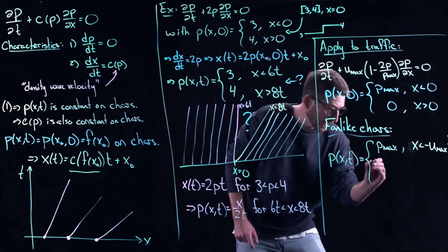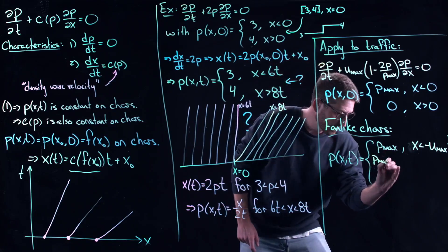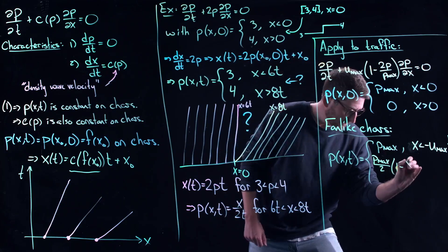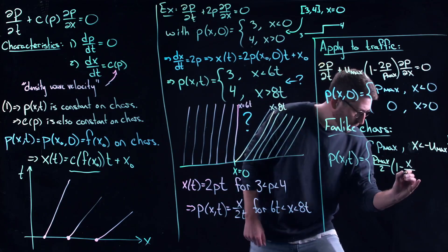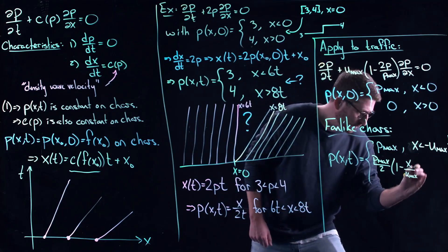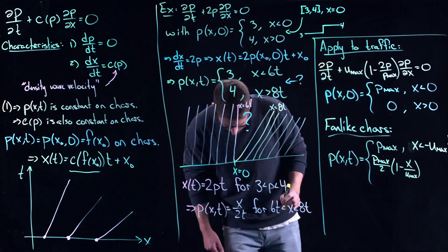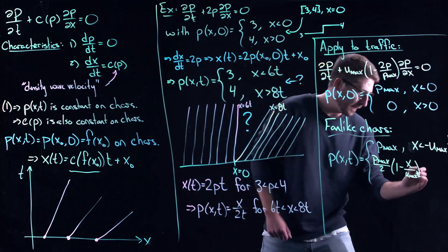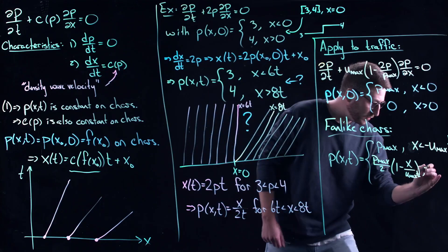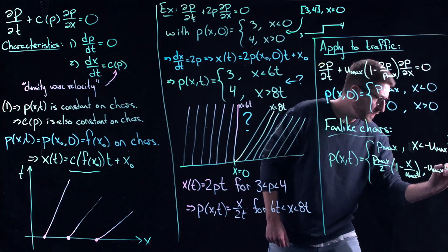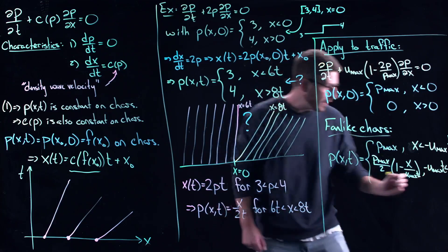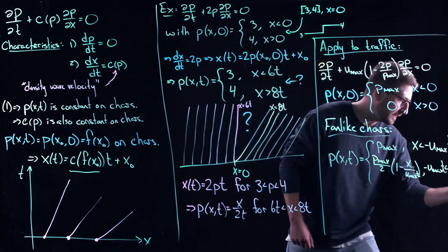Then you've got the fans. So you have ρₘₐₓ/2 times (1 - x/(uₘₐₓt)), and this is the people who have been close enough to the light and are able to proceed.